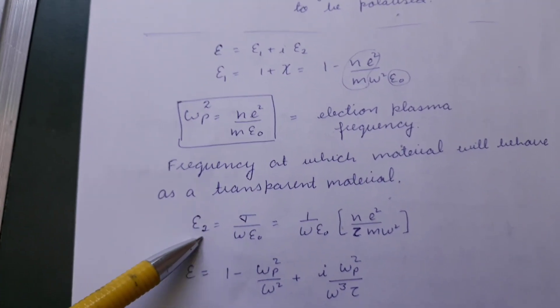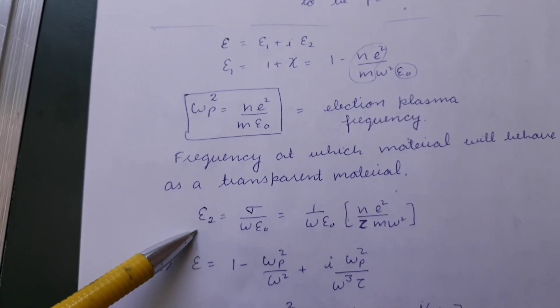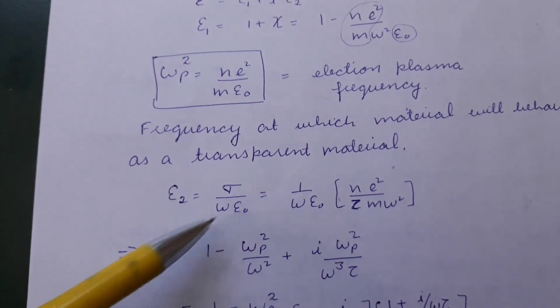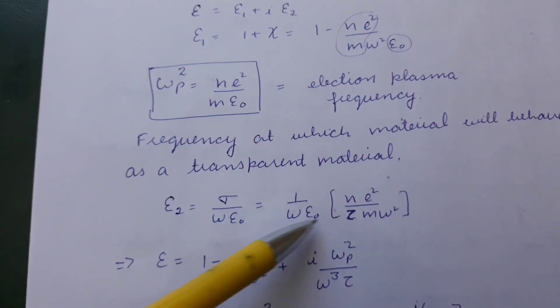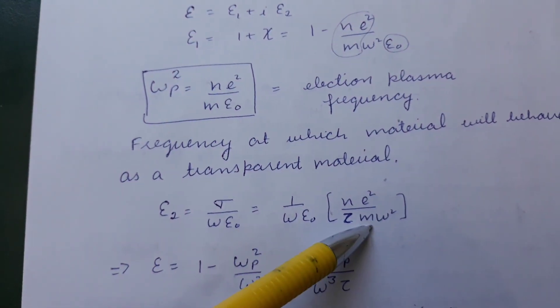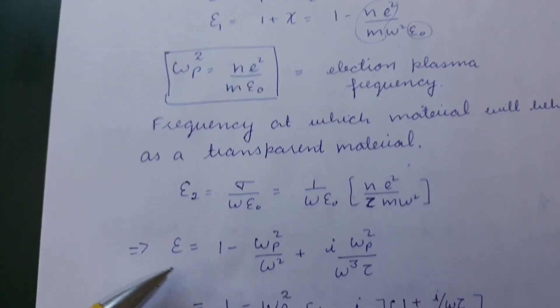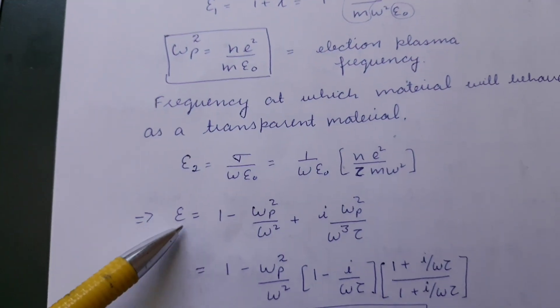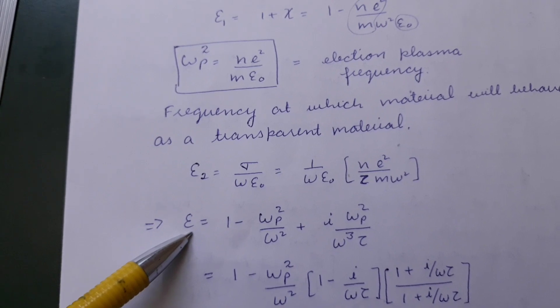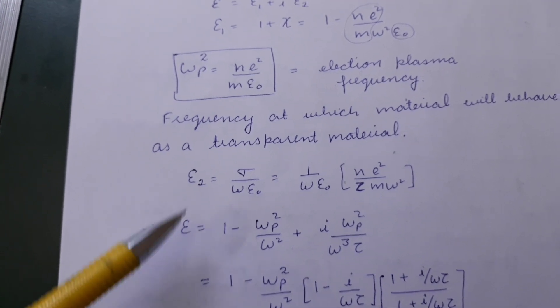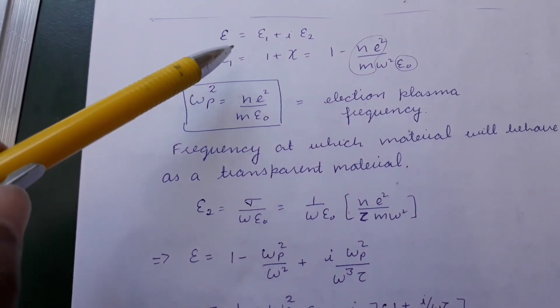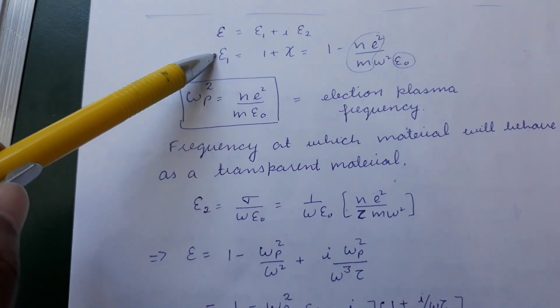To find the imaginary part of permittivity, we substitute the value of sigma, and the total permittivity is written as the real part plus i times the imaginary part.